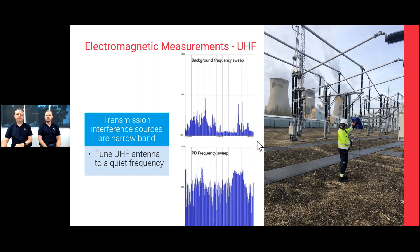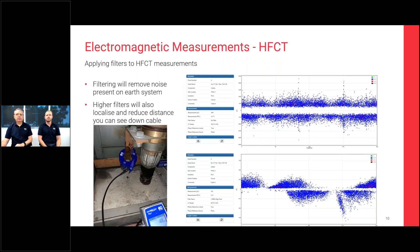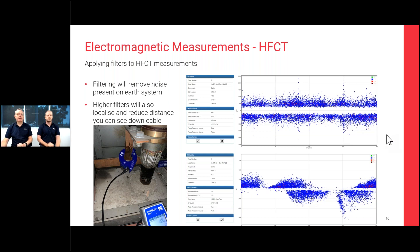For HFCT measurements, filters are applied to remove interference. In one example, an HFCT on the cable earth of a three-core XLPE cable showed significant noise in the unfiltered plot. After deploying a 1.8 MHz high-pass filter to remove low-frequency interference noise, a clear indication appeared of two sources of partial discharge on two different phases — visible as distinct clusters — associated with that cable or its terminations.